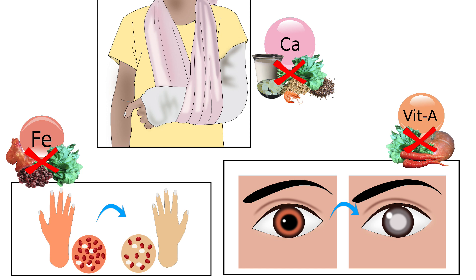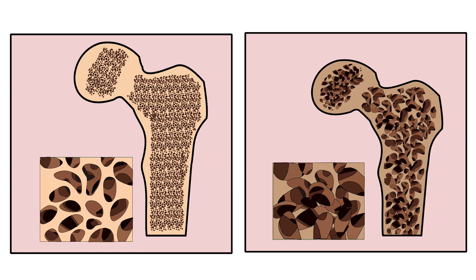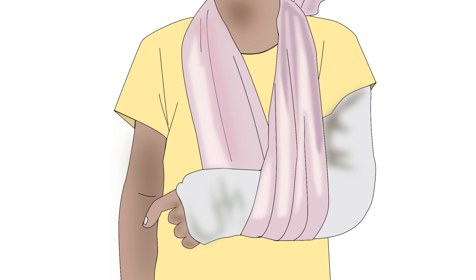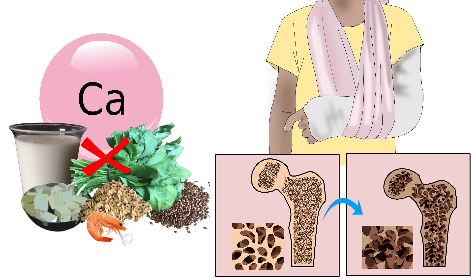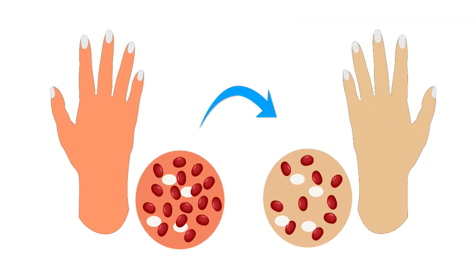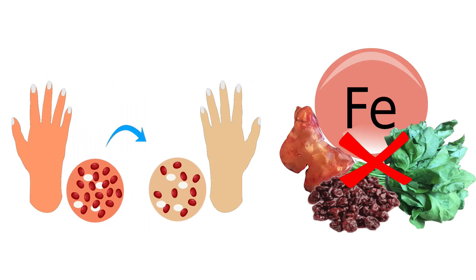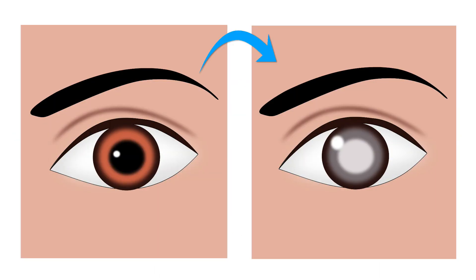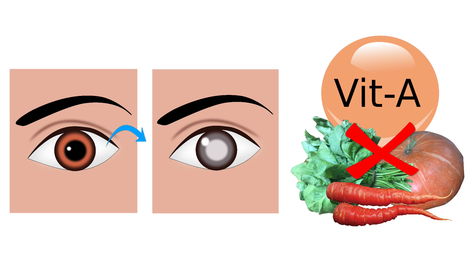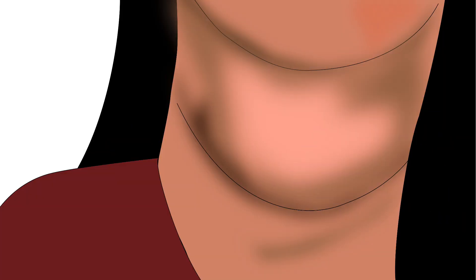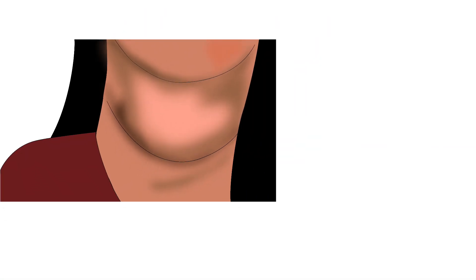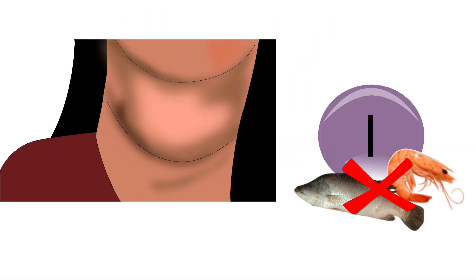Let's understand this with four examples. Bone thinning and increased risk of fractures are signs of calcium deficiency. Anemia is a sign of iron deficiency. Night blindness is a sign of vitamin A deficiency. And hypothyroidism is a sign of iodine deficiency.